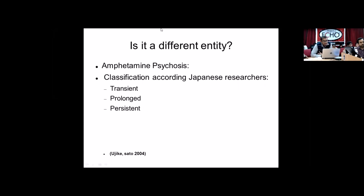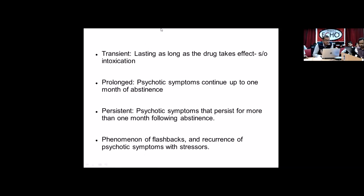Is amphetamine psychosis a different entity? Looking at ICD-10 and DSM criteria, we have amphetamine-induced psychosis and stimulant-induced psychosis as categories. In Japan, this kind of psychosis has been classified into three types: transient, prolonged, and persistent. The transient psychotic disorder lasts as long as the drug takes effect and is suggestive of intoxication. Prolonged psychotic symptoms are those continuing up to a month of abstinence. Persistent ones are psychotic symptoms persisting for more than one month following abstinence.